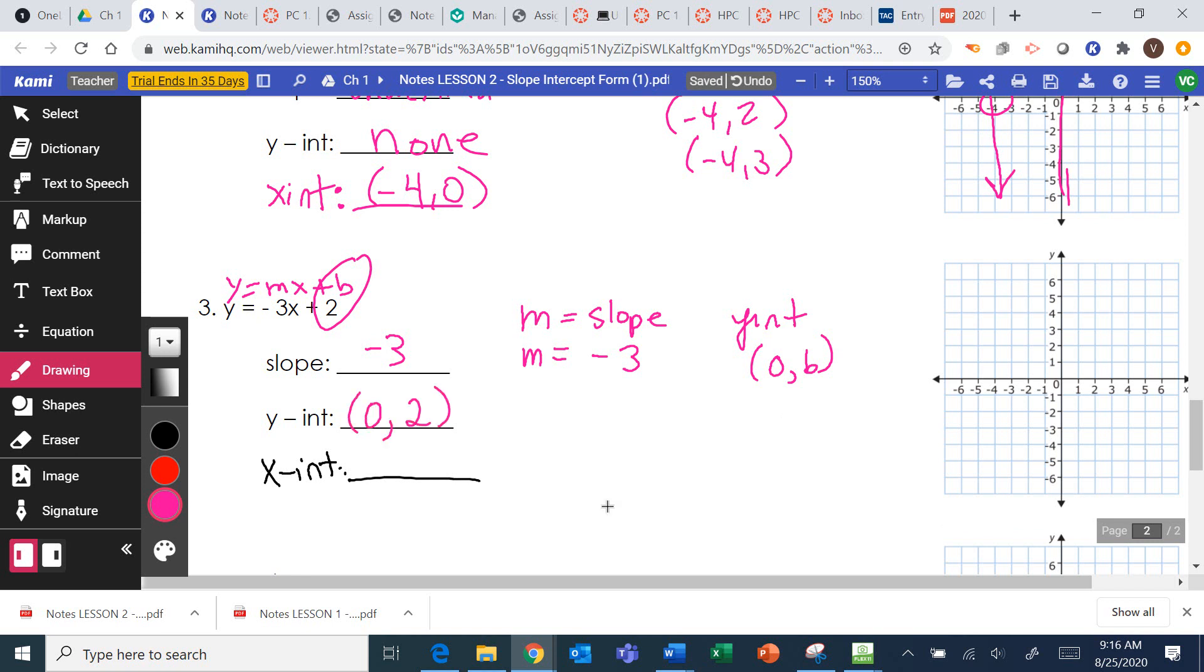Can you help me with the y-intercept? 0, 2. And make sure you have the whole parentheses, 0, 2. Now, the x-intercept is the one tricky thing. X-intercept. Plug 0 in for y and solve the equation.